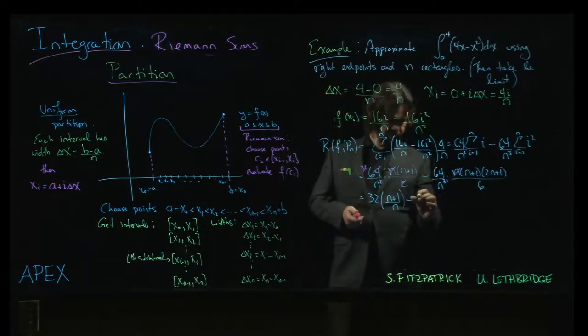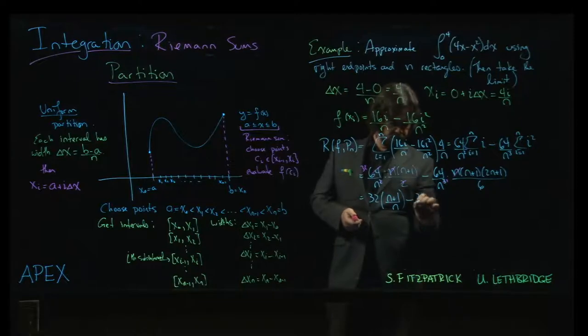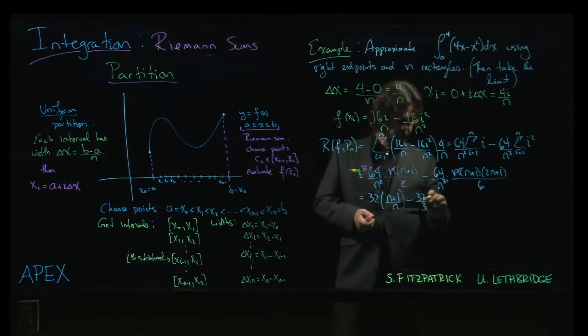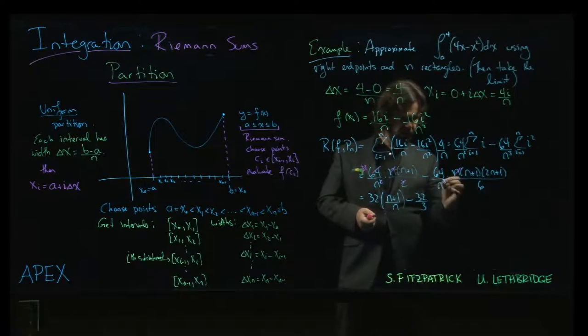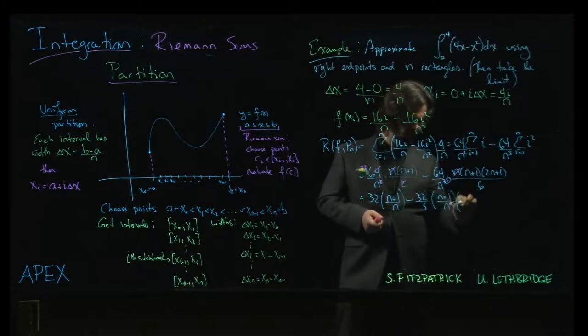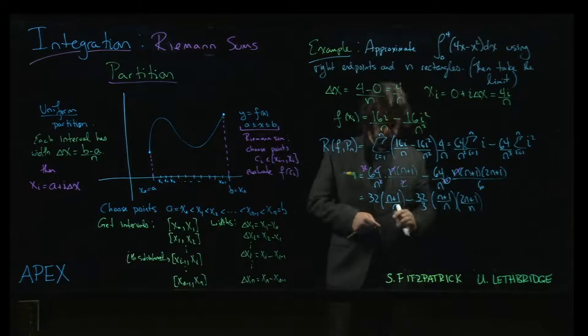64 over 6, I guess I can simplify that to 32 over 3. Now those two, there's two n's left here, n squared. I'm going to write it like this, n plus 1 over one of the n's, and then 2n plus 1 over the other one.